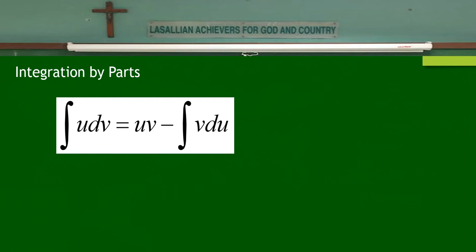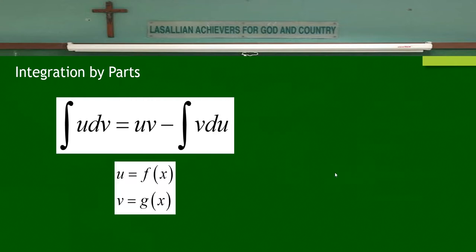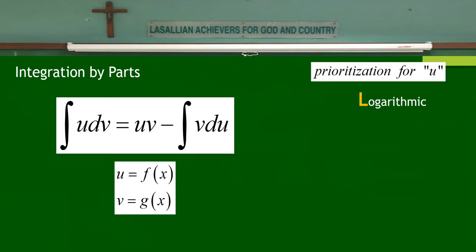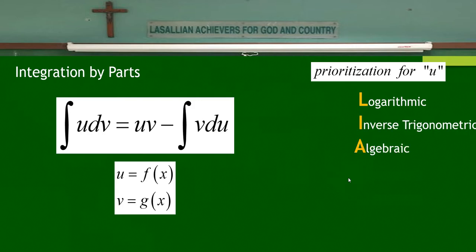The formula we will be using is: the integral of u dv equals u times v minus the integral of v du. Note that u and v are both functions of x. Since there are two functions, how do we know which one to prioritize as u? For the prioritization of u, I use the acronym LIATE.